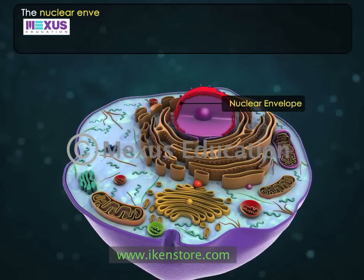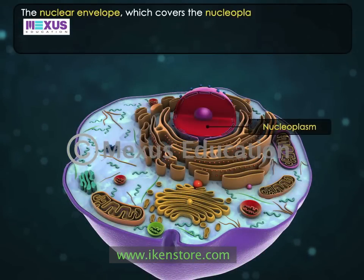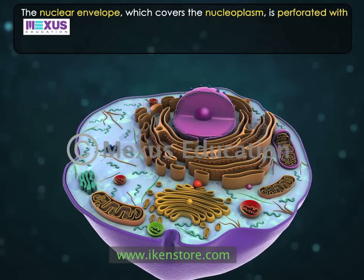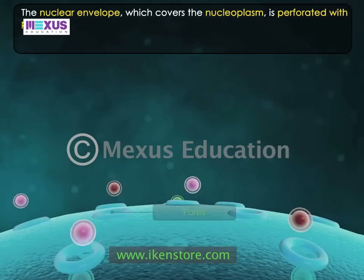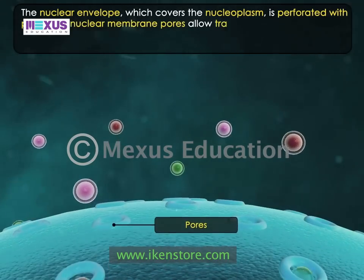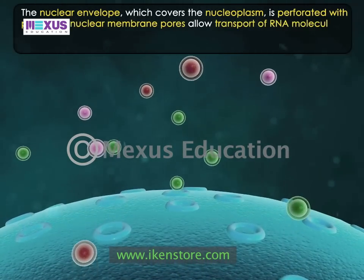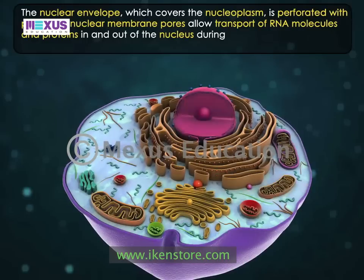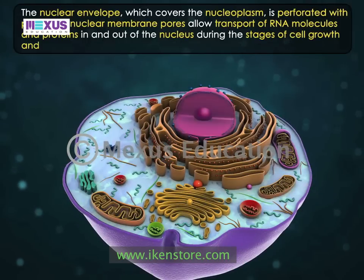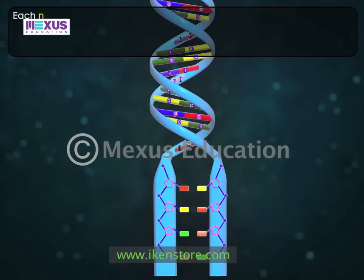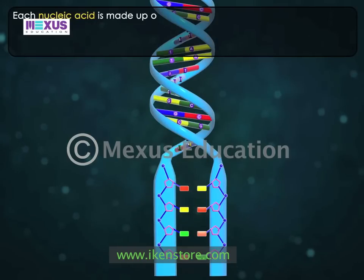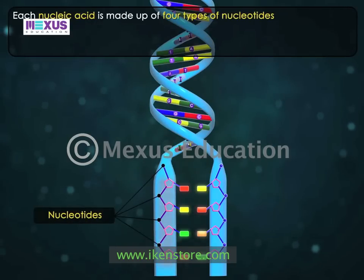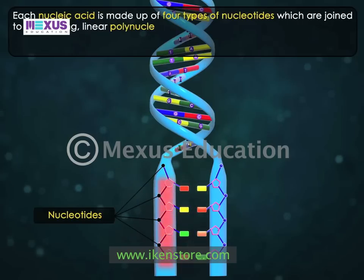The nuclear envelope which covers the nucleoplasm is perforated with pores. The nuclear membrane pores allow transport of RNA molecules and proteins in and out of the nucleus during the stages of cell growth and reproduction. Each nucleic acid is made up of four types of nucleotides which are joined to form a long, linear polynucleotide chain.